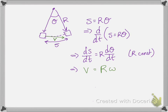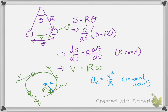We can recognize that ds/dt is the speed of the object moving in the circle — the tangential velocity, or the speed in the tangential direction. So the relationship between the tangential speed, which is a translational variable, and the angular speed is v equals r omega.